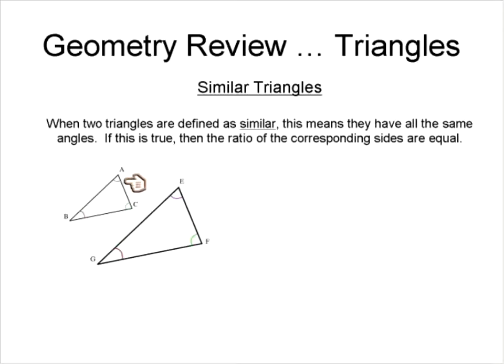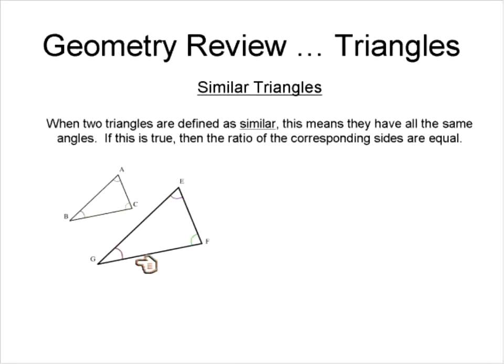So in this triangle, angle A and angle E are the same measure. Angle B and angle G, and angle C and angle F are also the same. What that means is that the ratio of their sides are equal to each other.